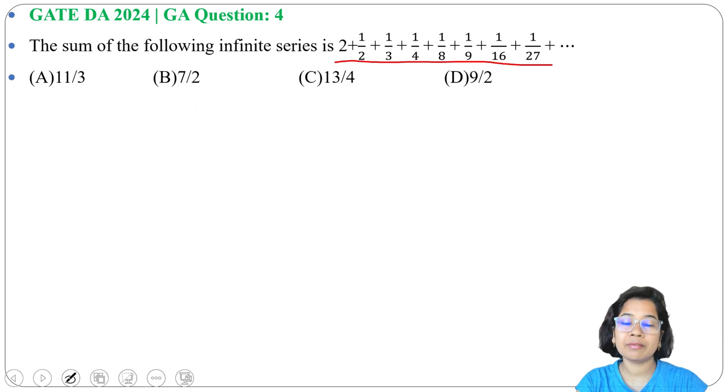This series can be converted into a GP series - geometric progression. In case of infinite GP, the sum formula is A divided by 1 minus R. So here, I will divide this as 1 plus 1, 1 by 2, 1 by 4, 1 by 8, 1 by 16 in one GP.